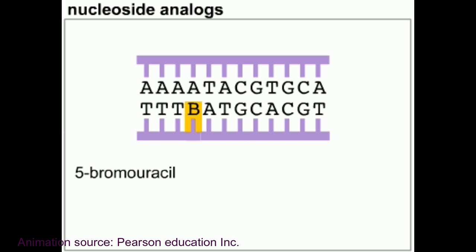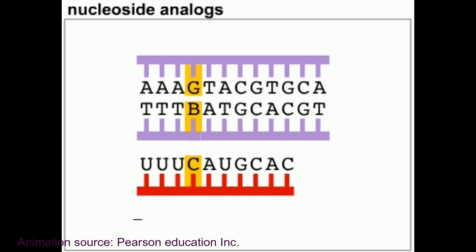For example, 5-bromouracil is a nucleotide analog of thymine, but it often pairs with guanine rather than adenine. Incorporation of 5-bromouracil can therefore lead to a base substitution mutation of a guanine for an adenine.